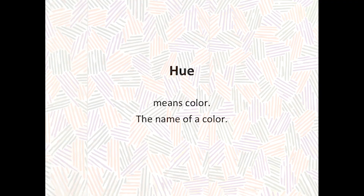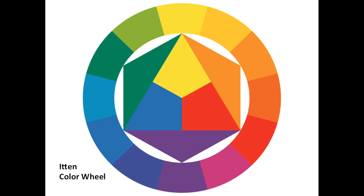The subtractive and additive primary colors are complementary colors — they are opposite one another. The term hue simply means color; it's the name of a color. Both scientists and artists have devised systems to organize and label colors. The Itten color wheel shows the primaries of pigments, which deviate slightly from the additive and subtractive primaries — these are the colors used when mixing paint or ink.